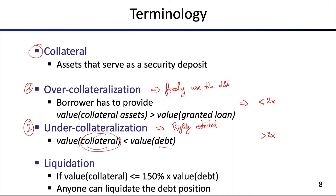The fourth term I'd like to introduce is liquidation, which we already mentioned in the high-level system figure. More formally, if the value of the collateral goes below a certain threshold — for example, 150% times the value of the debt — then you might become liquidated. Anyone can create a liquidation request or liquidate a debt position. As mentioned earlier, you might get a percentage discount on the collateral value, which incentivizes you to perform a liquidation. There may also be auctions instead of fixed spread liquidations.